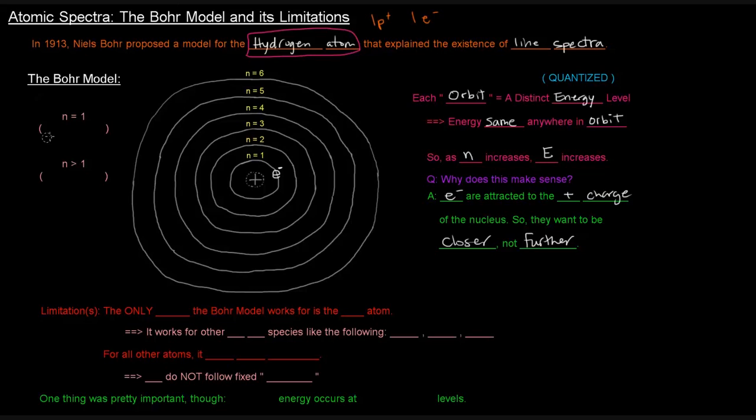In fact, if the electron is at the n equals 1 orbit, then it's considered to be at the ground state. And if it's at an n value higher than 1, it's considered to be in the excited state.